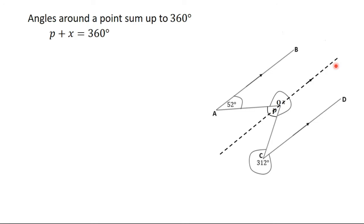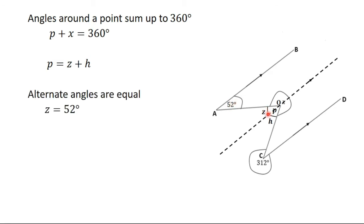This imaginary parallel line divides P into two parts: Z and H. To find P, we find Z and H and add them. Looking at the position of 52 degrees and Z, we can see that Z and 52 degrees are alternate angles. We know that alternate angles are equal, so Z equals 52 degrees.